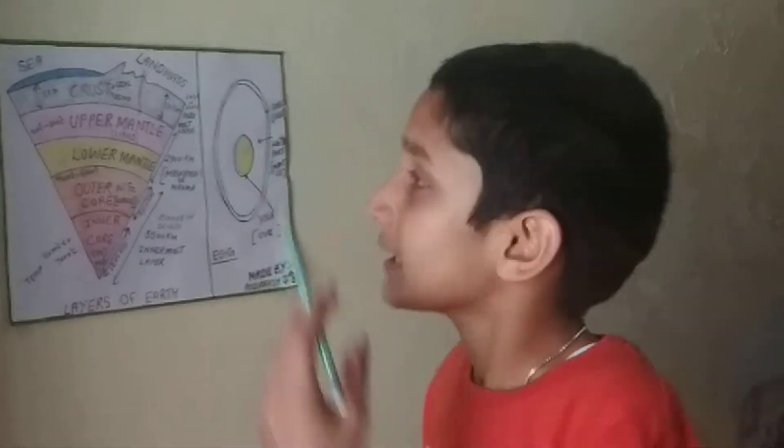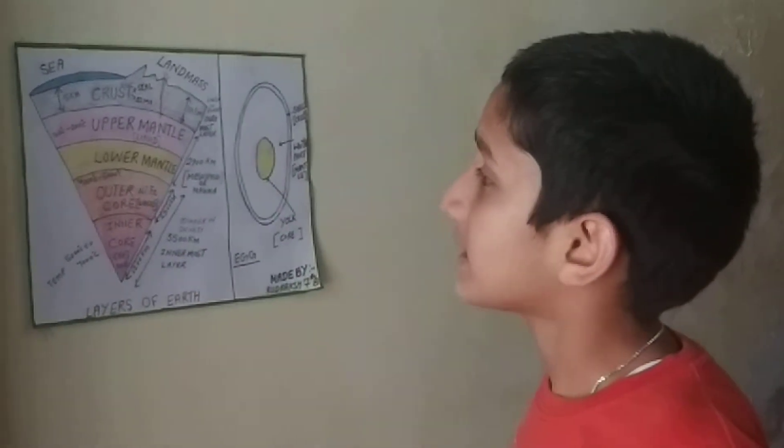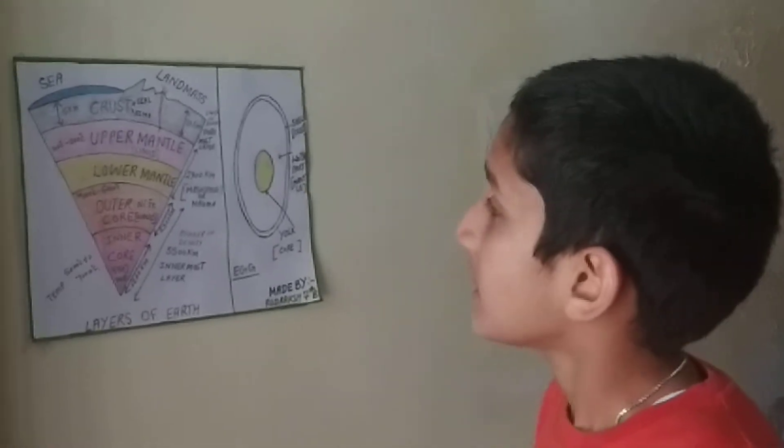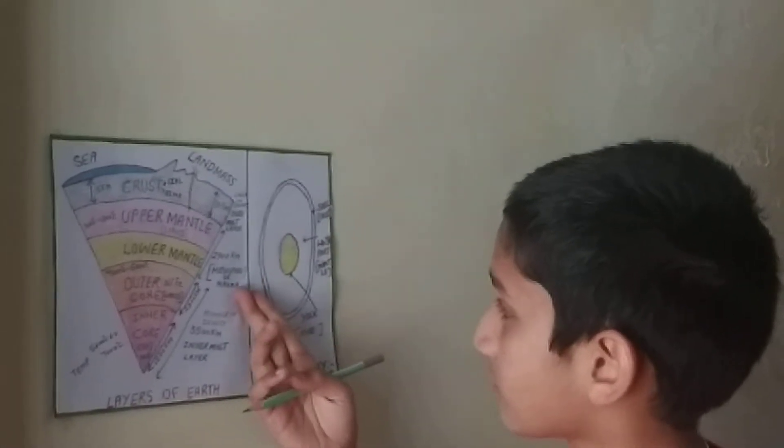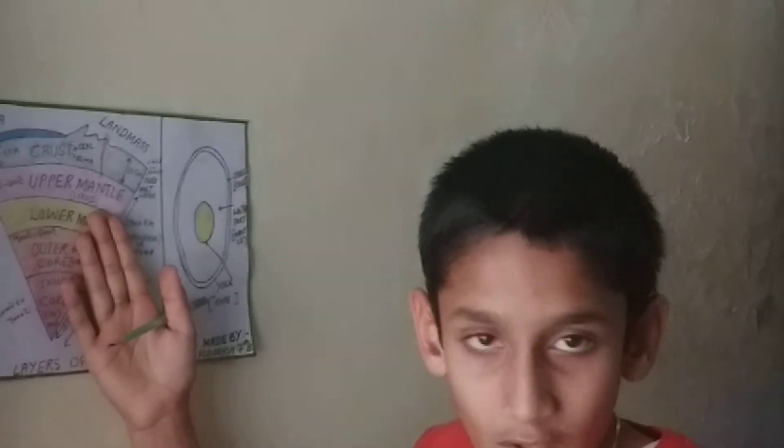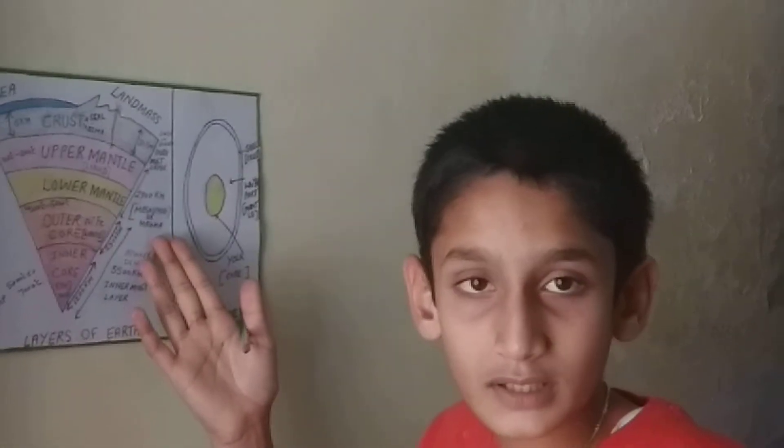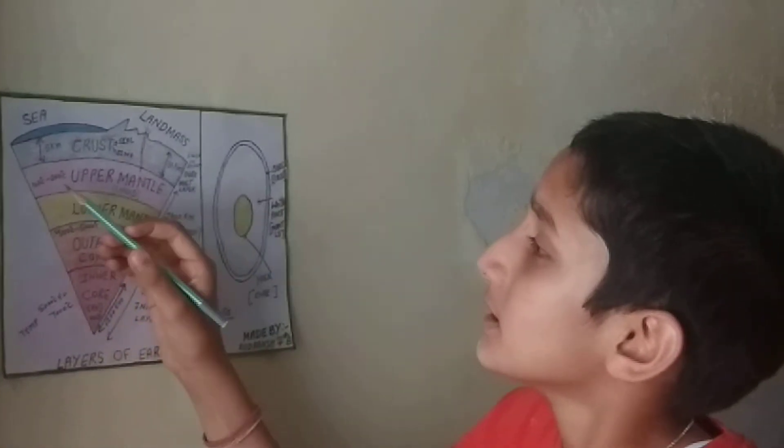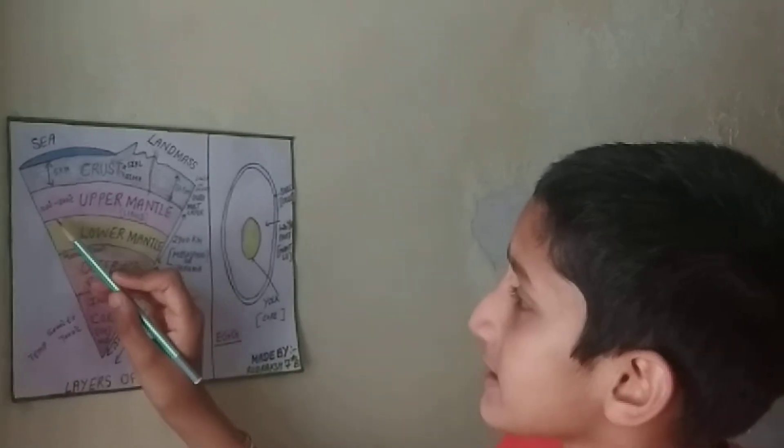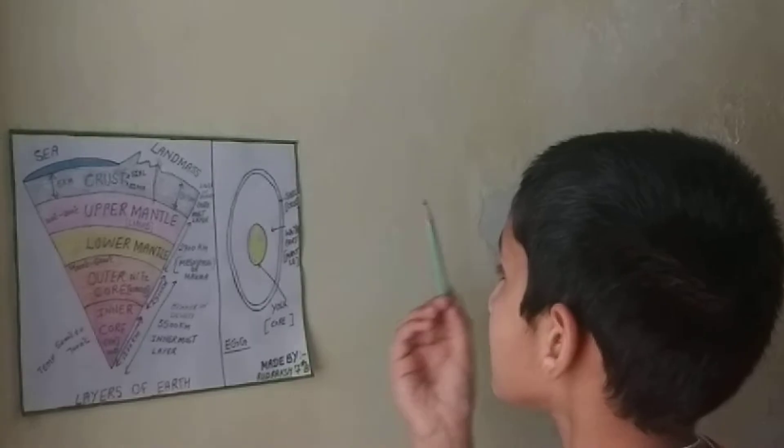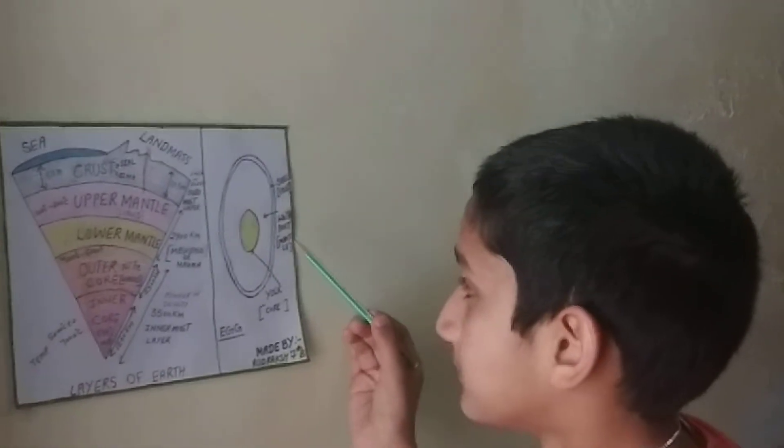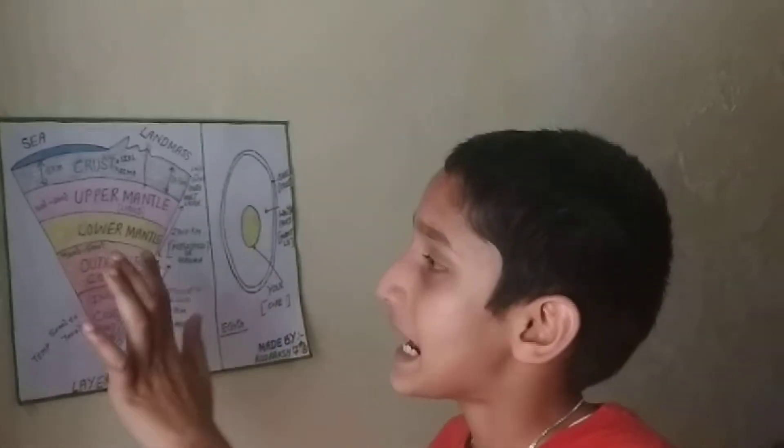The next layer is the mantle. The mantle is the middle layer of the earth with a thickness of 2900 km. It is also known as the mesosphere. It is liquid in form and is made up of a liquid substance known as magma. The temperature of the mantle is 100 to 200 degrees Celsius. It resembles the white part of the egg and is made up of two parts: upper mantle and lower mantle.